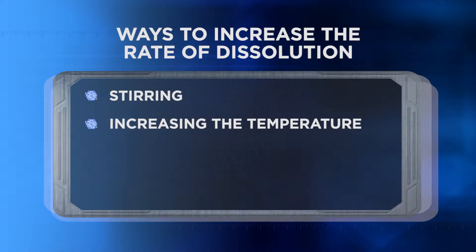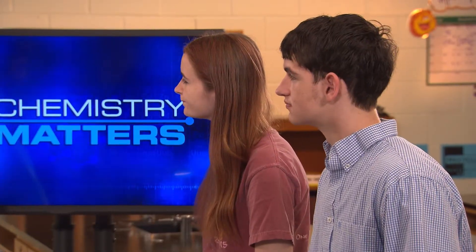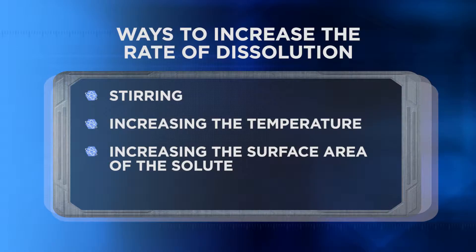Heating the liquid also helps: increasing the temperature increases the kinetic energy of the solvent, causing particles to move around more and creating greater numbers of collisions between solvent and solute particles. Additionally, using regular sugar instead of a sugar cube dissolves faster because smaller pieces increase the surface area of the solute. Crushing or grinding a solute to make a powder decreases particle size but increases the surface area that contacts the solvent, making it dissolve faster.